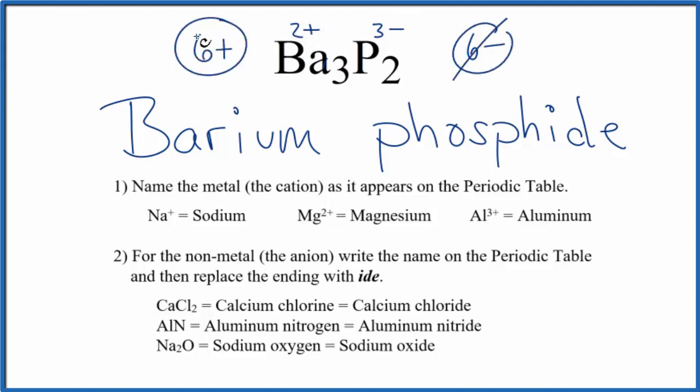Charge, that'll balance out, give us a net charge of 0. So formula for barium phosphide is Ba3P2.